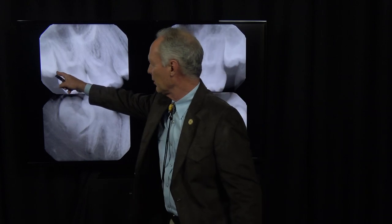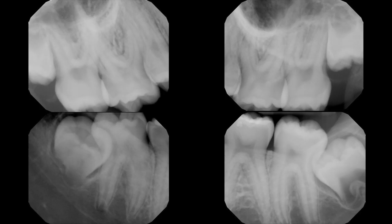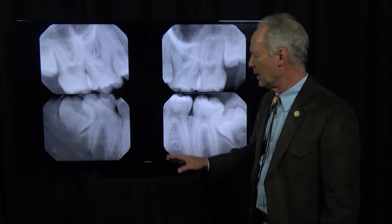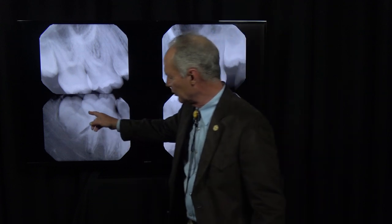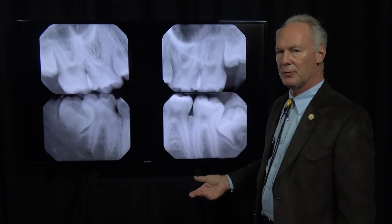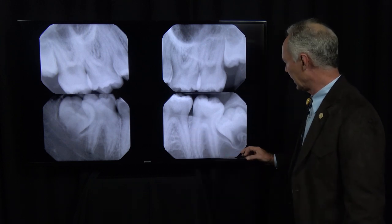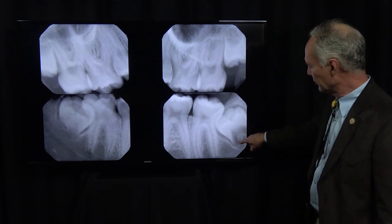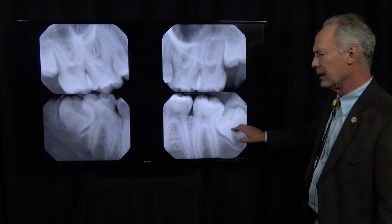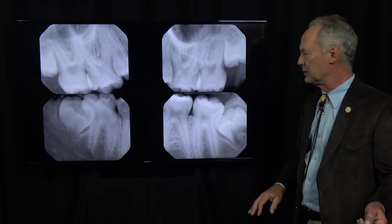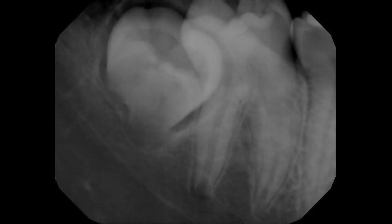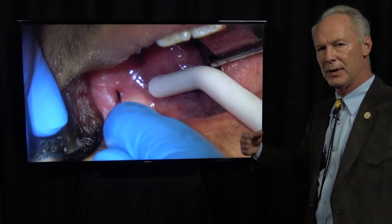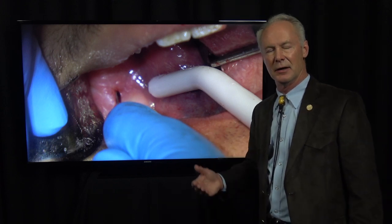We've got four impacted wisdom teeth. These wisdom teeth are partially formed, and this is a good time to extract wisdom teeth. You don't want to wait until the root is completely formed because that's a much more difficult extraction, but you also don't want to extract the tooth if it doesn't have any root because it will roll in the socket. So when the root is about a quarter formed, that's the ideal time to extract a wisdom tooth, administering local anesthetic blocks in the mandible.